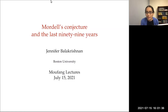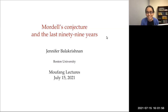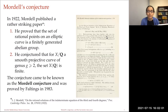Let me thank the organizers Martin, Timo, and Utmar for putting all this together. This is really fun to be a part of. Today what I'd like to talk about is Mordell's conjecture on rational points on curves of genus two or more, and what has happened over the 99 years since the conjecture was stated in 1922.